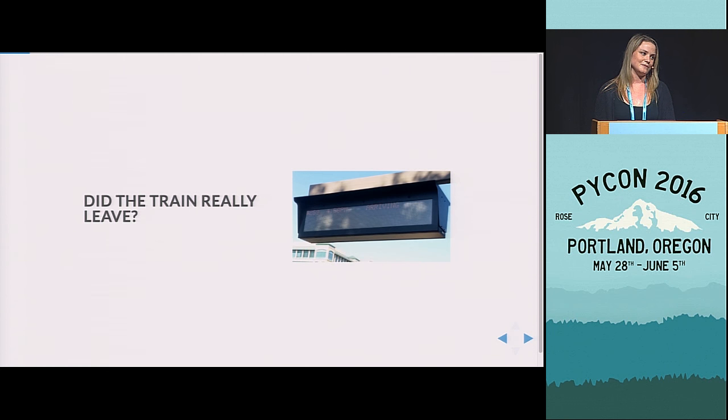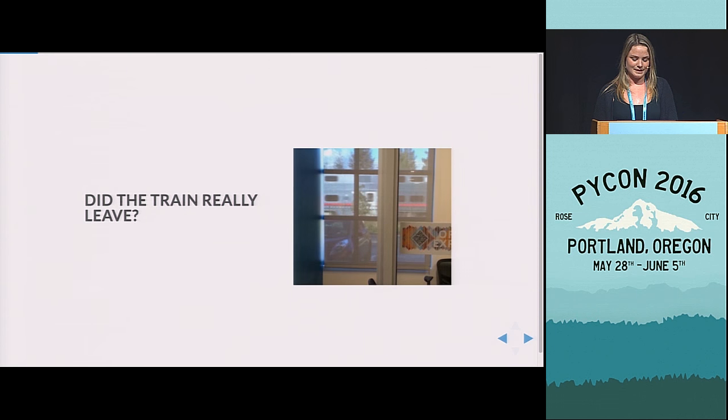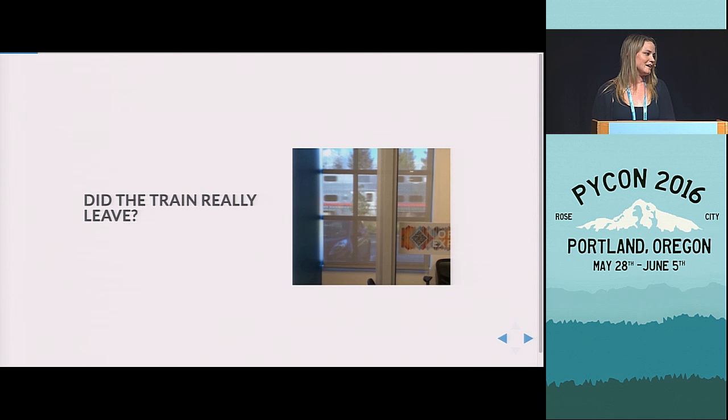They also show on the website that we can scrape to get basically a train and when it's predicted to arrive and whether it has arrived. Actually, not whether it's arrived. We have to say that maybe it has arrived and left based on when it just disappears from the website. So this didn't really seem like a very trustworthy source.